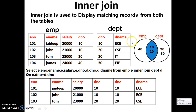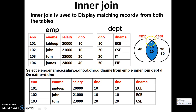Here you can see — this is my left table (EMP) and this is my right table (DEPT). In the EMP table, the D numbers available are 10, 20, and 40. In the DEPT table, the D numbers are 10, 20, 30, and 50.